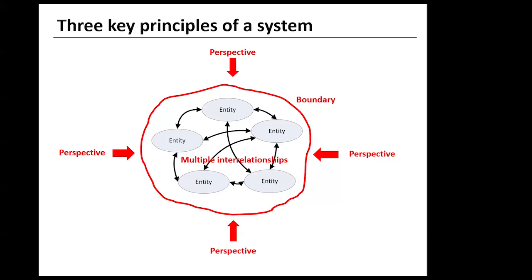On the other hand, a customer might see the system as including the retailer's promise that the goods will be delivered within 24 hours. Where we draw the boundaries of a system has a profound effect on how well we understand the overall behavior of the system.